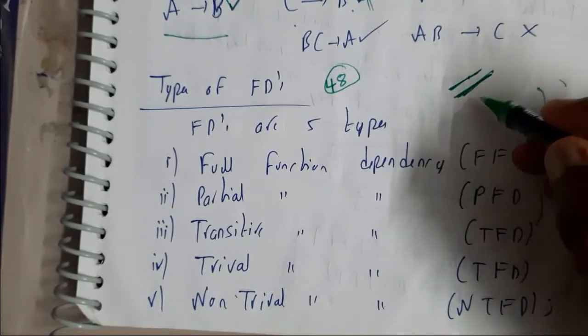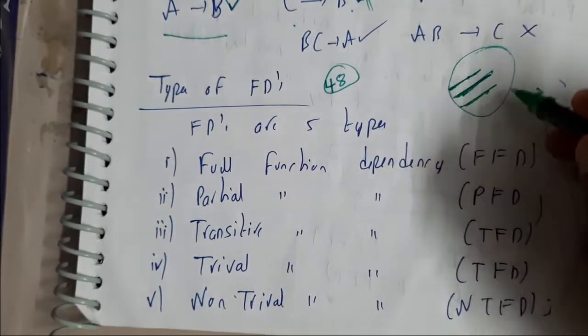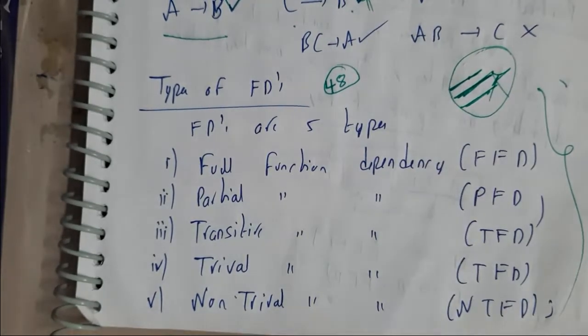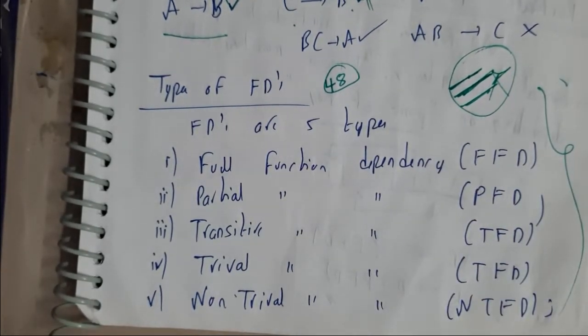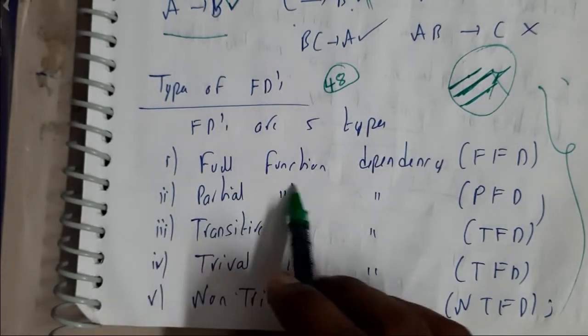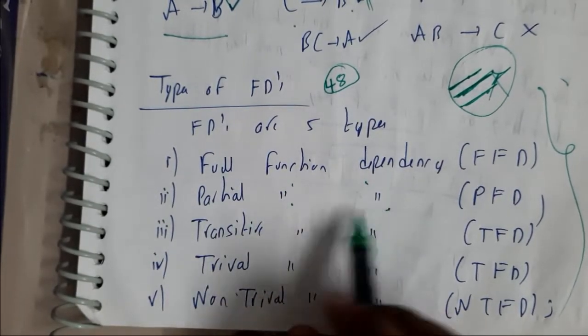If you learn functional dependency, you will be getting normal forms. If you get normal forms, you can do normalization. So these three topics are interrelated completely. That's the reason why you need to learn this topic really perfectly.